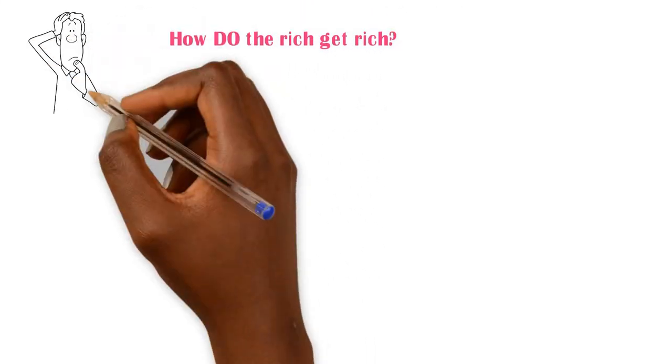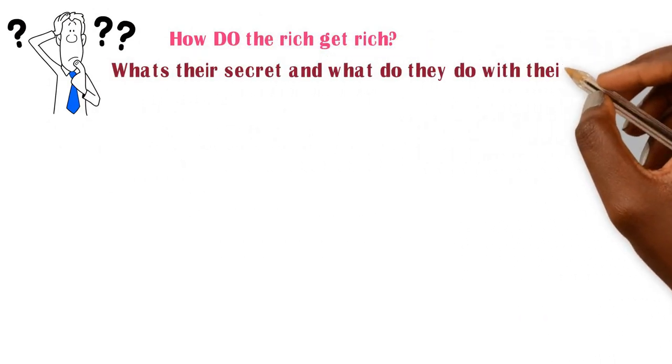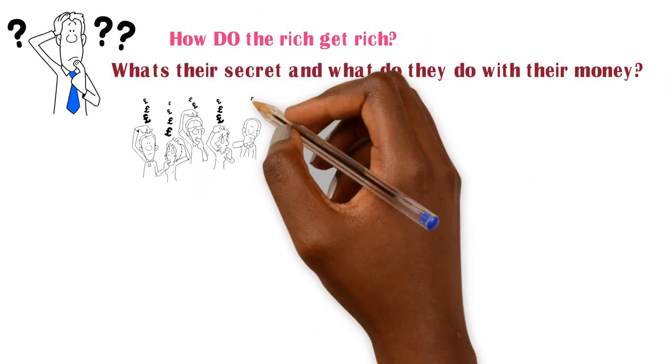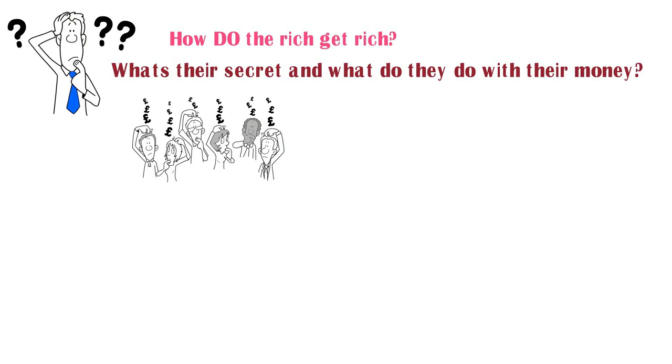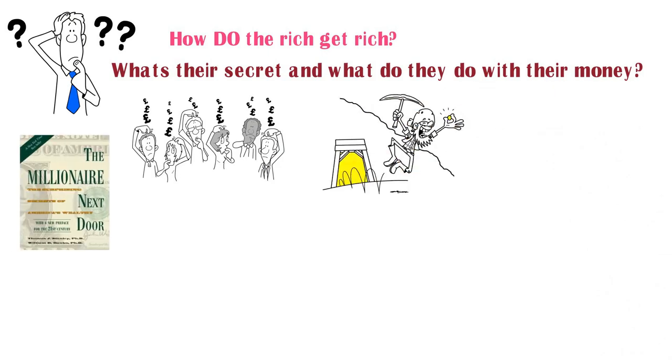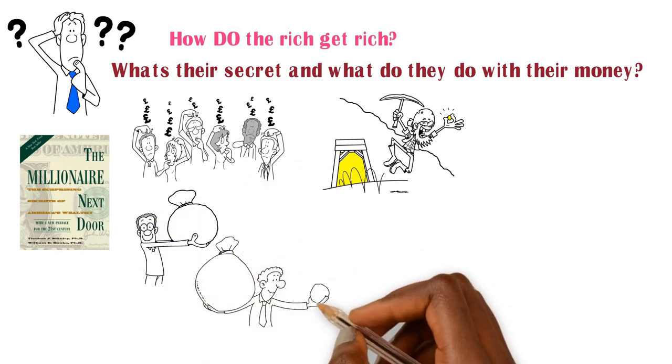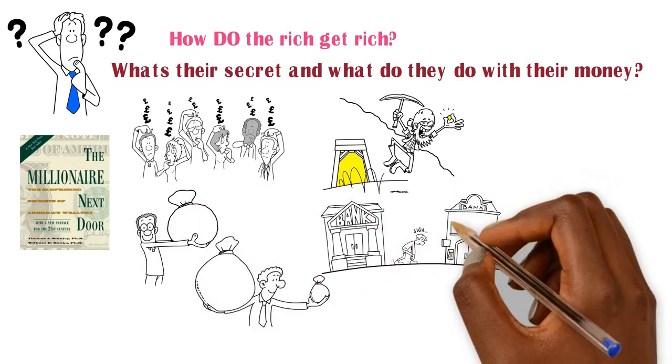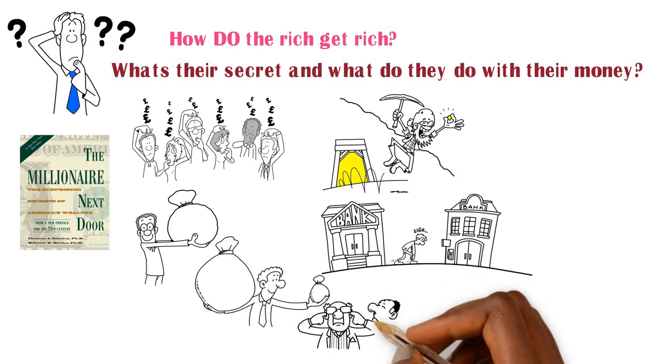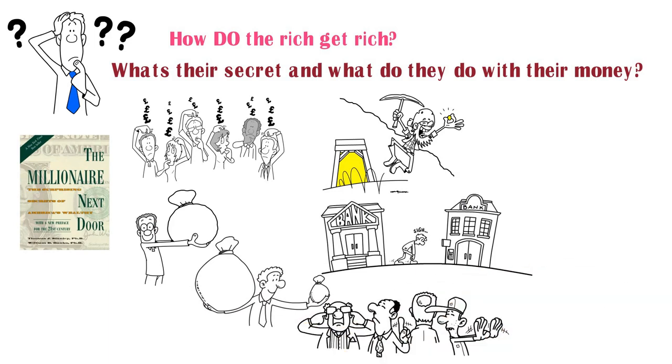So, how do the rich get rich? What's their secret and what do they do with their money? We all want to know how we can achieve even just a tiny sliver of their wealth. The Millionaire Next Door shows you the simple spending and saving habits that lead to more cash in the bank than most people will earn in their lifetimes. This book is essential to help you avoid critical mistakes on your way to financial independence.